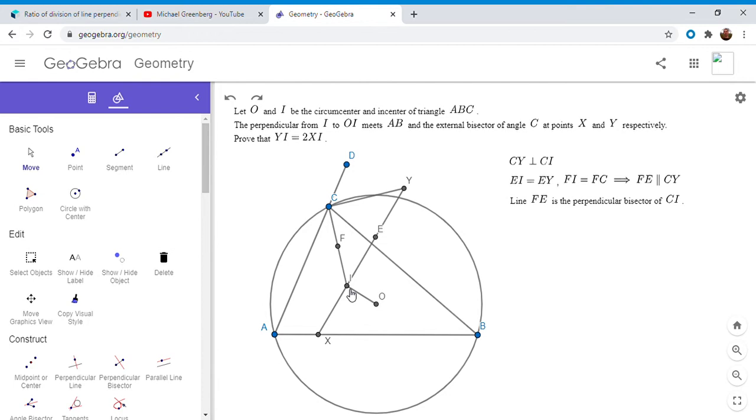So in particular, that means FE has to be the perpendicular bisector of CI. Because it's both perpendicular to it and CF is equal to FI. So how do we utilize that? The next step I kind of knew to do just out of sort of pattern recognition, because I'd seen this idea before. It turns out that the perpendicular bisector of CI actually passes through the midpoints of arc AC and arc CB.